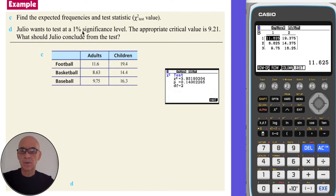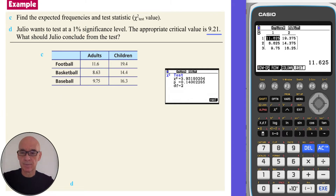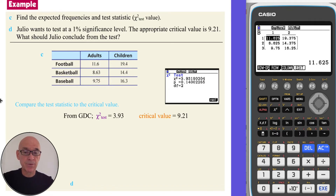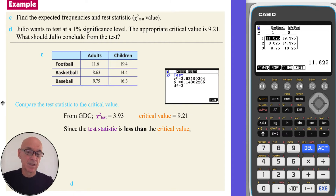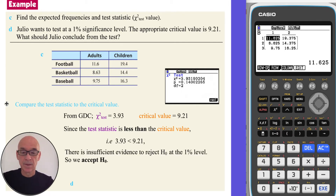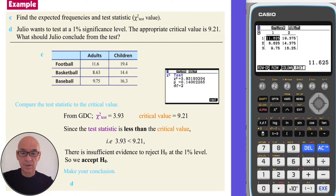In part D, Julio wants to test at the one percent significance level, and the appropriate critical value we're told is 9.21. We compare the test statistic to the critical value: the test statistic was 3.93 and the critical value is 9.21. Since 3.93 is less than 9.21, there is insufficient evidence to reject the null hypothesis at the one percent level. We accept the null hypothesis, and our conclusion is that age and favourite sport are independent.